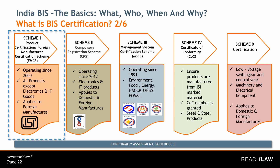Scheme 3 is the Management System Certification Scheme, which grants a license to use a standard mark for demonstrating conformity of a management system — not a product — to all requirements of a given Indian standard. Separate applications are submitted for different management systems using prescribed BIS formats. An audit of the premises may be conducted at any time, and either a license or certificate of conformity can be granted. Guidance for use of the standard mark is mentioned in the regulation.